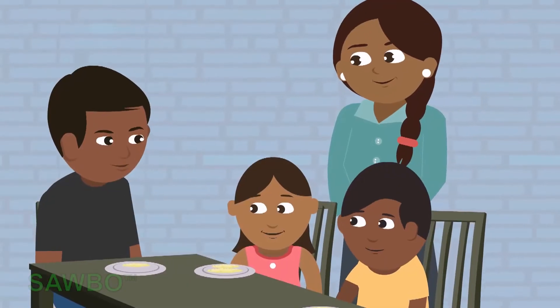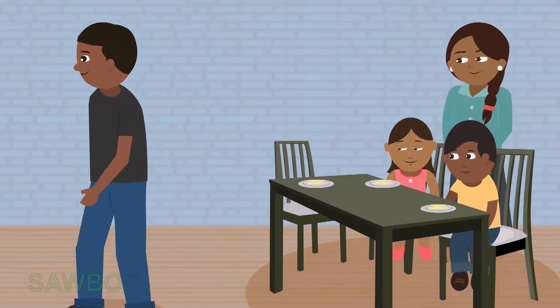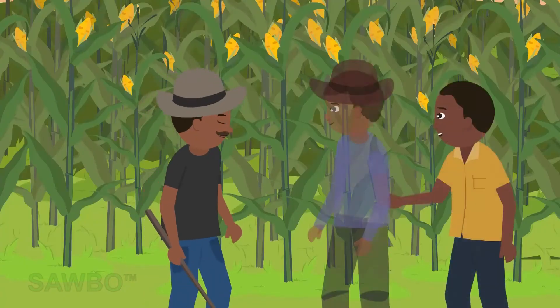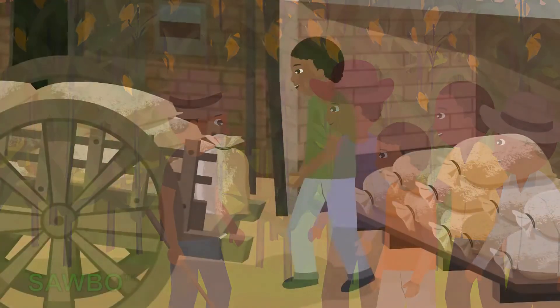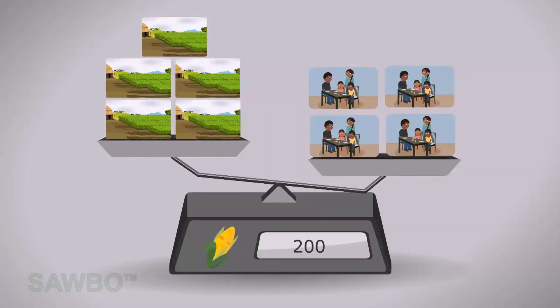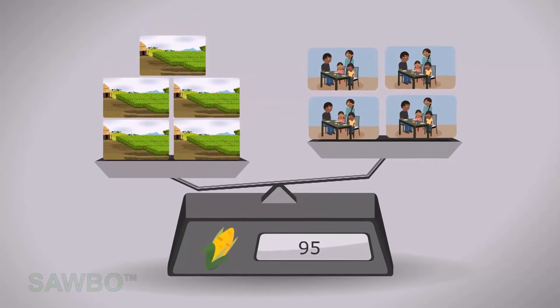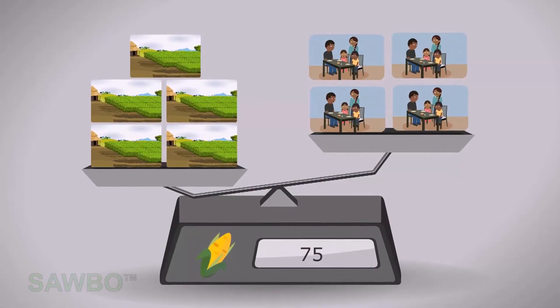Since the price of maize is high, some people decide to invest in maize farming. Next season, the maize harvest has increased due to more maize farmers. Due to this strong oversupply of maize, the price goes down from 200 units per bag to 75 units per bag.